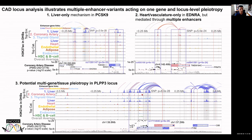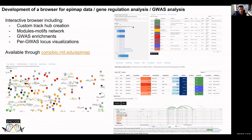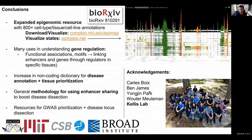Overall, we've built this tool that is very helpful for uniform processing of these data sets, generating a large resource, and using it for gene regulatory studies and disease studies. Snapshots from the interactive website allow custom track hub creation, modules, motif networks, GWAS enrichments, and per-locus visualization across 30,000 loci. You can browse by GWAS region, by GWAS study, then individual SNPs within those regions, the specific enhancers and where they're active, and target genes. This is team work led by Carlos Bois with several members of my lab. Thank you for your attention.